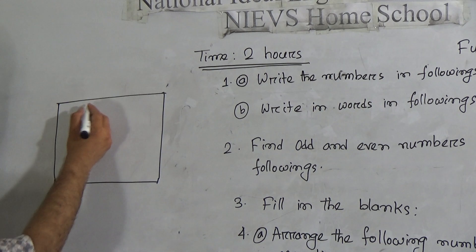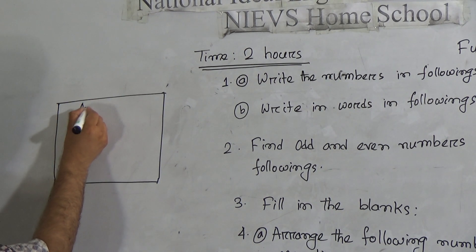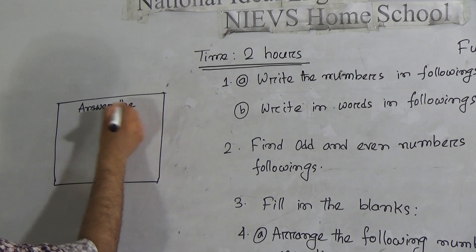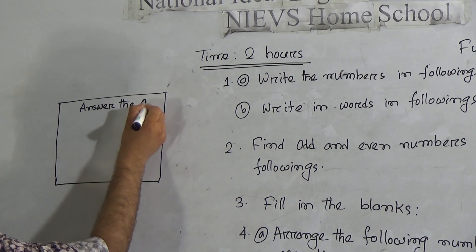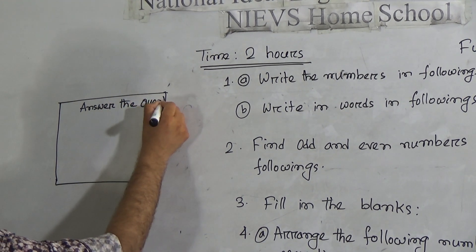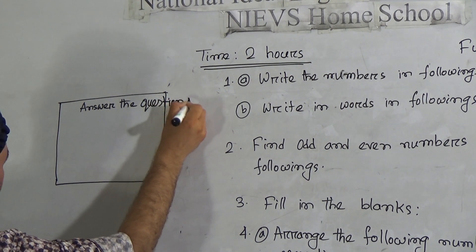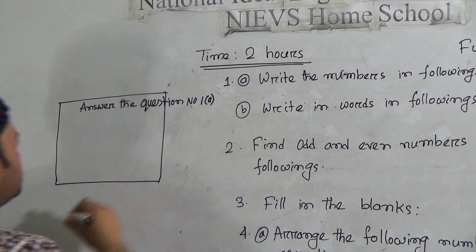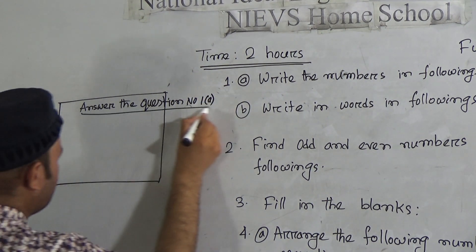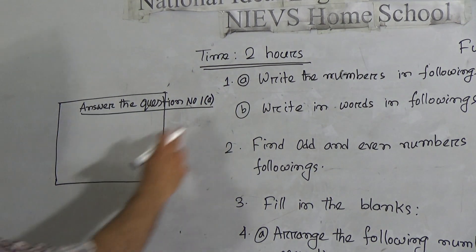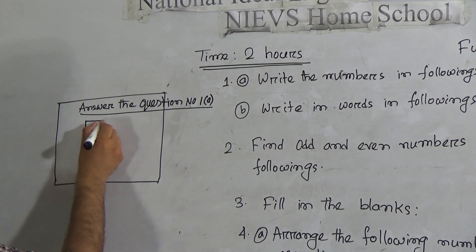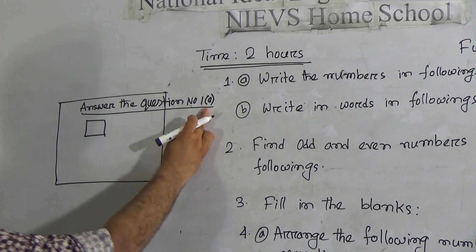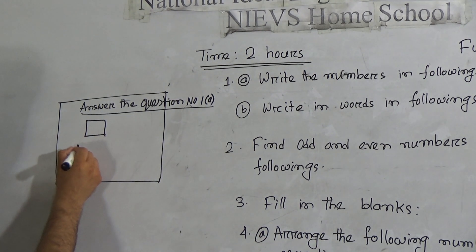For answering a question, you have to write the answer here. Answer the question number one A, then you have to write the answer here for question one A. After finishing the answer of one A, you have to write the answer for one B in a similar way.